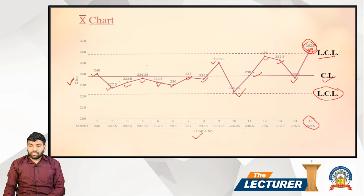The X-axis shows sample numbers 1 through 14 (and 15 total). The samples are plotted along the x-axis.